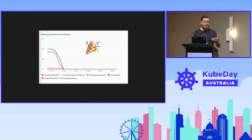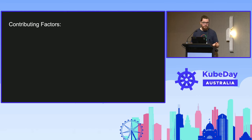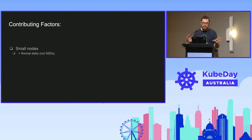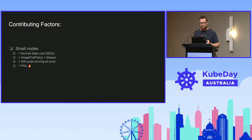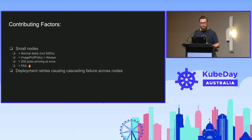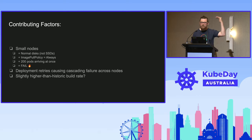About a week later, we run a retro and look for contributing factors to this incident. It turns out these nodes are actually quite a bit smaller than any of us really remembered. They're also running normal disks — spinning metal — and we're also setting imagePull policy of always, which means every single pod landing on that node goes to the registry just to check if the image hash has changed. Combine all of that with 200 pods arriving at the same time and you're going to have a bad time. We also had a retry pattern causing cascading failure through the cluster, and maybe we had slightly more builds than usual — but not a hundred times more.